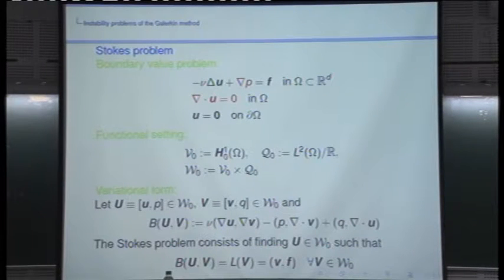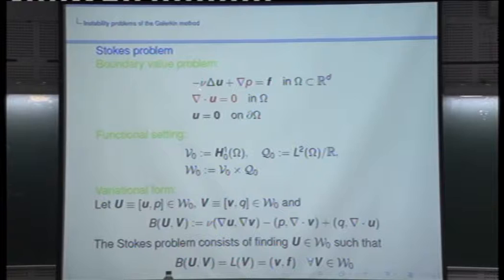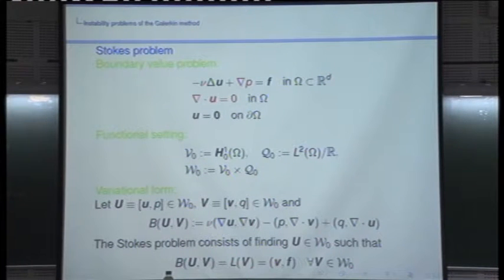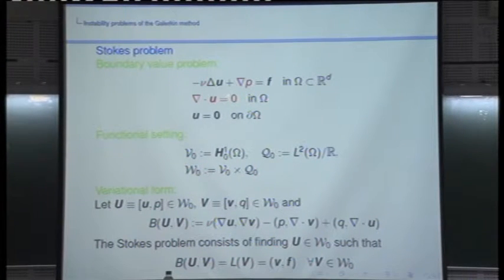Now let's consider the Stokes problem, which is also relevant to the instability discussion. We seek a velocity field U and a scalar pressure P such that: -Laplacian(U) + grad(P) = F and div(U) = 0. The bilinear form is obtained by multiplying the first equation by a velocity test function V and the second by a pressure test function Q, then integrating by parts.